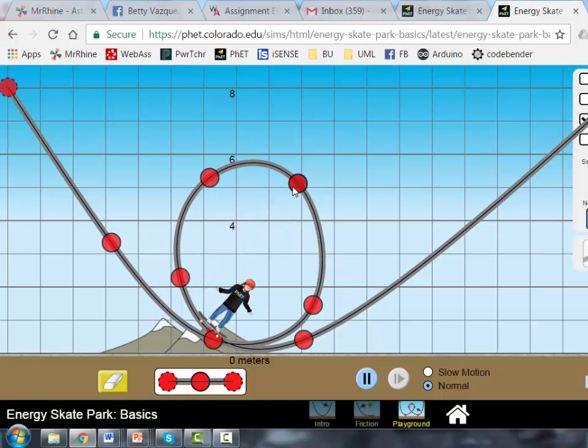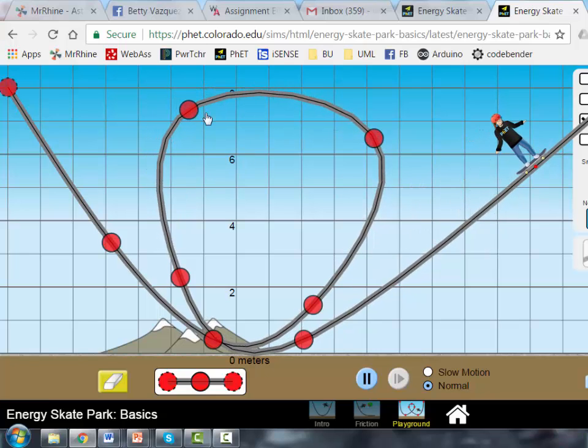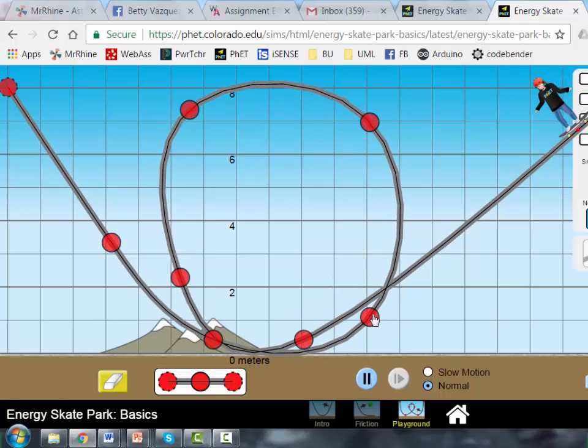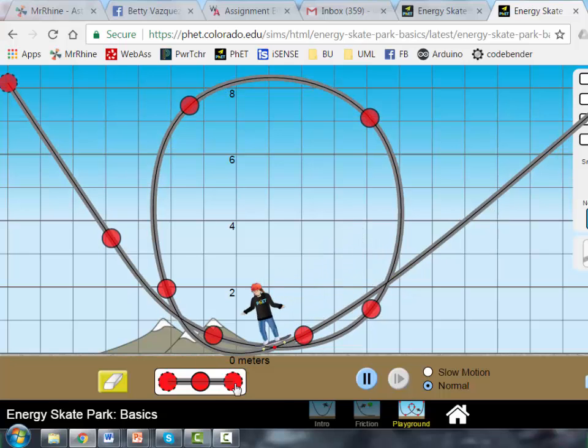So if I expand my loop to make this a larger loop, let's see what happens. Let me see if I can get the loop together before he comes back. Not a bad loop I got going here, sort of circular. He's going up, up, up, up, up, up. But he falls off.